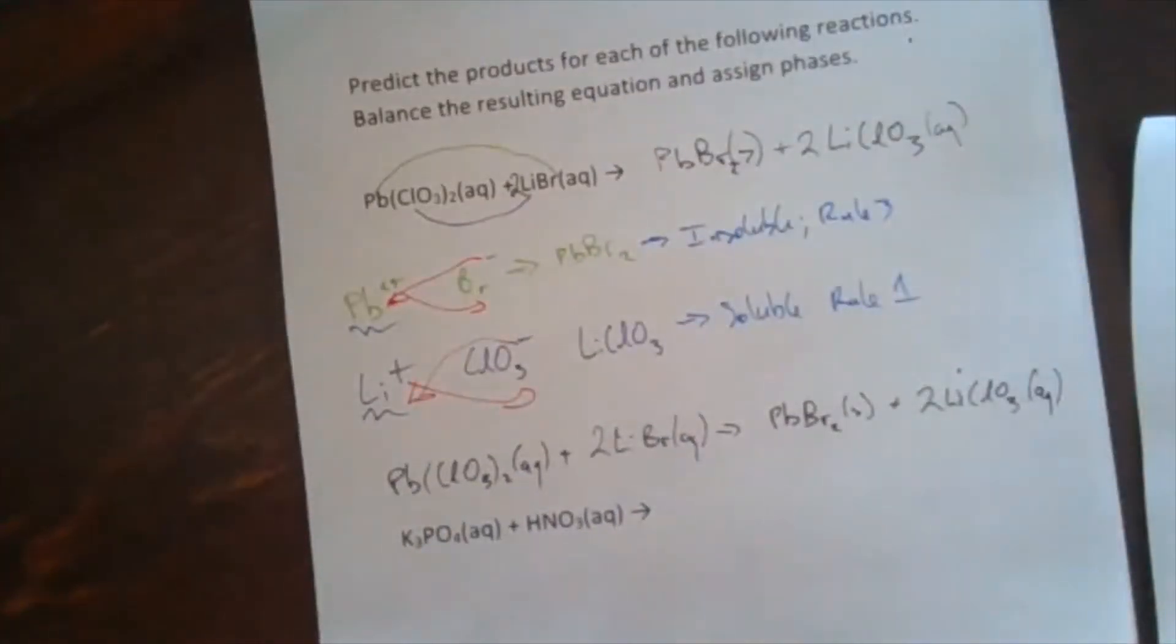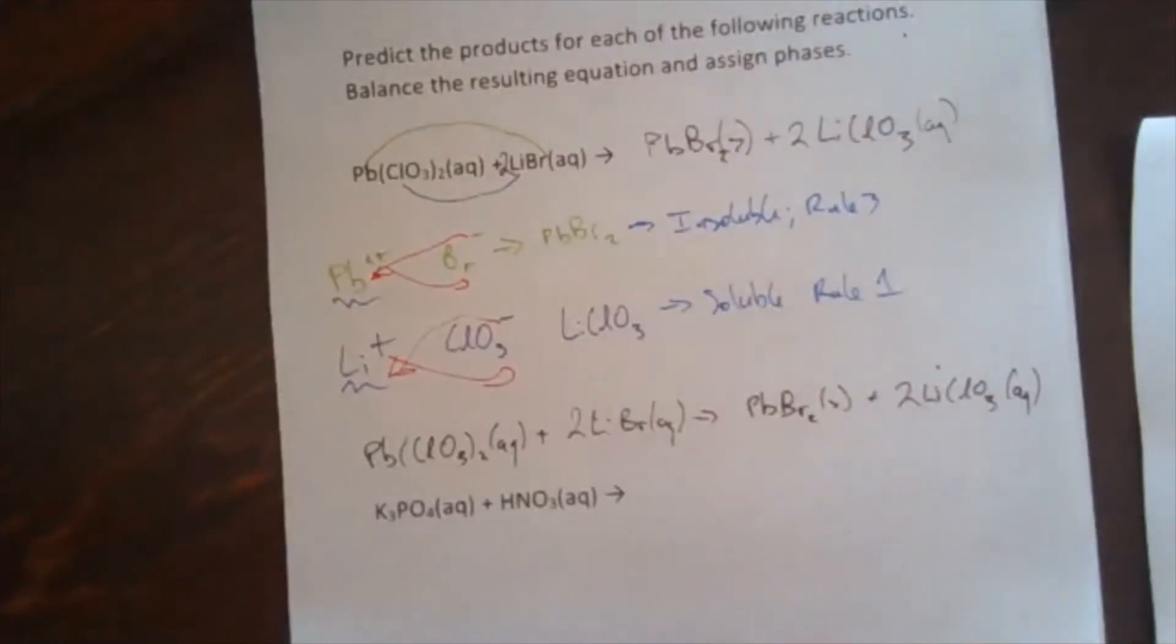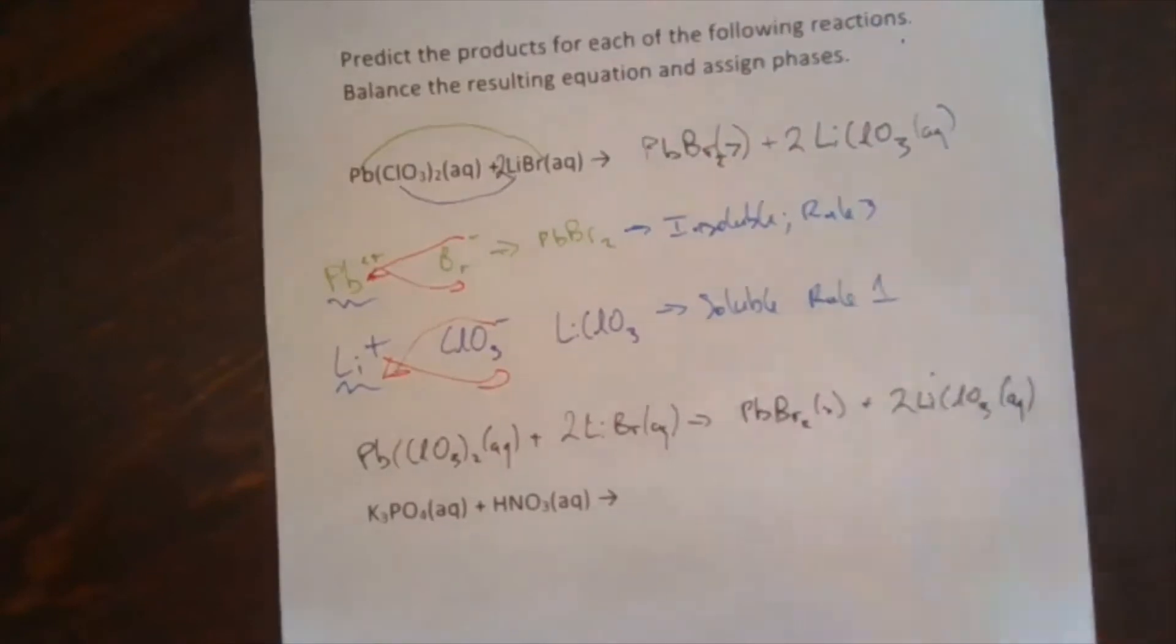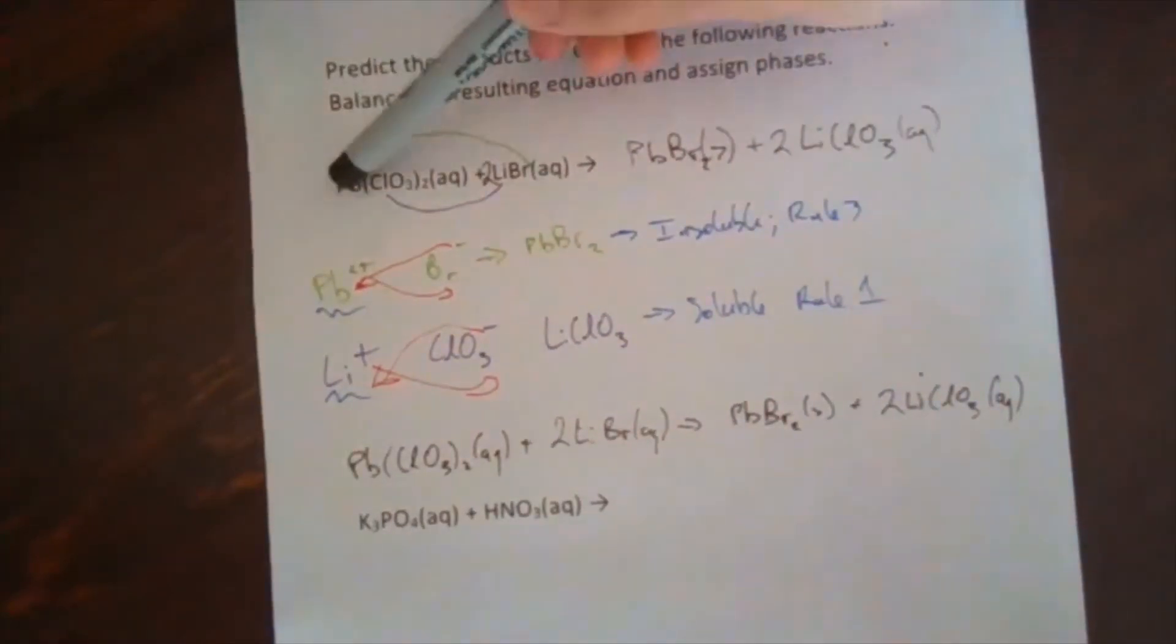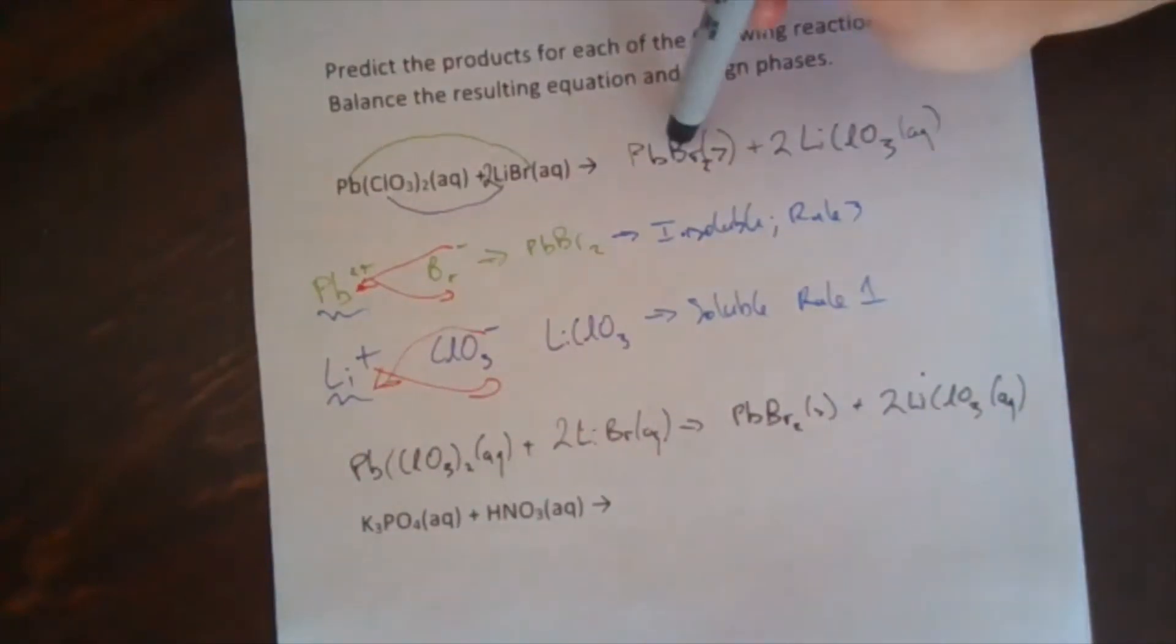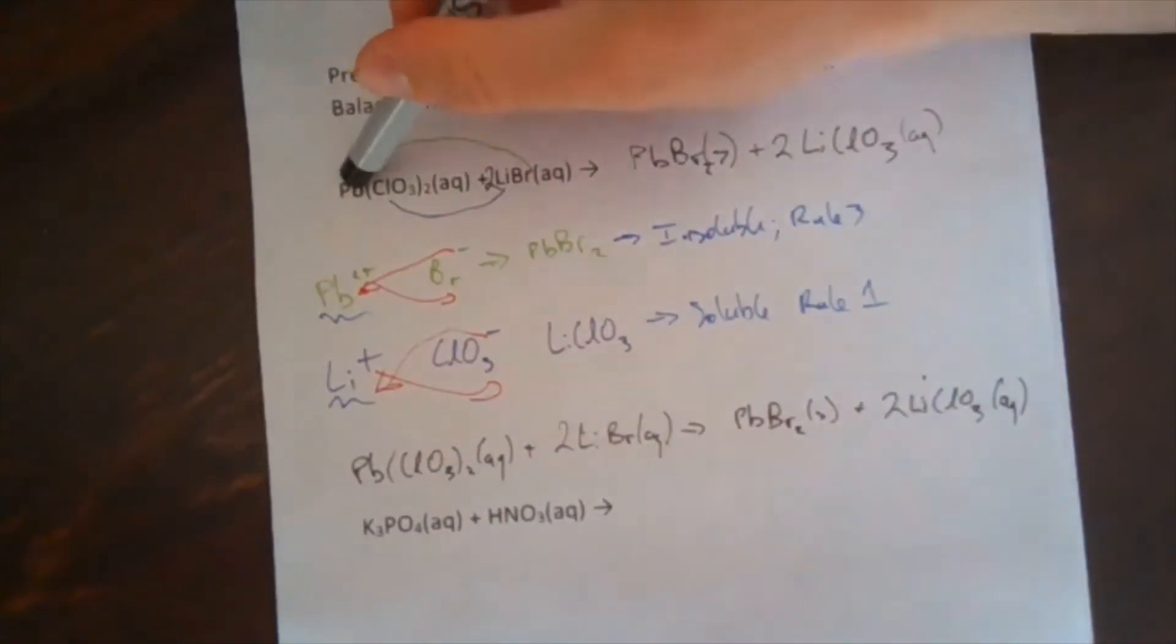So the overall reaction would be Pb(ClO3)2 aqueous plus 2LiBr aqueous becomes PbBr2 solid plus 2LiClO3 aqueous. We have completely predicted this reaction, what products we would make, what phases they would be in without doing it. We did not have to do any actual chemistry. That is actually the purpose of being a chemist. You want to be able to predict chemical reactions, predict what will happen without having to do it. If you had a solution of lead(II) chlorate, you probably shouldn't add lithium bromide into that mixture because you're going to make a solid.